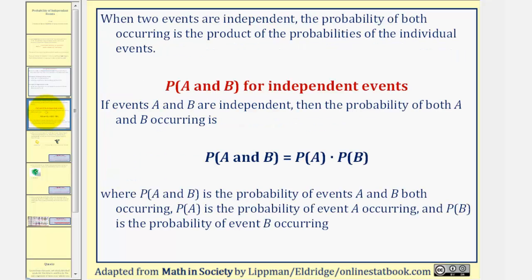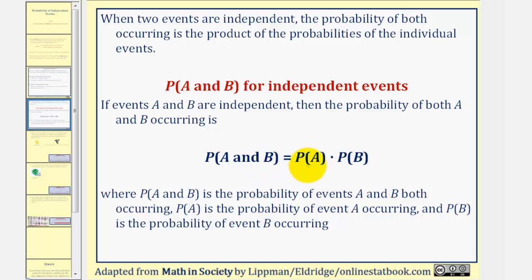When two events are independent, the probability of both occurring is the product of the probabilities of the individual events. So if events A and B are independent, then the probability of A and B is equal to the probability of A times the probability of B.